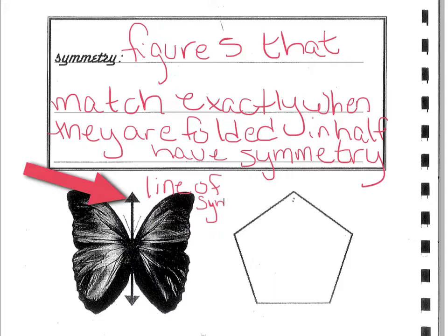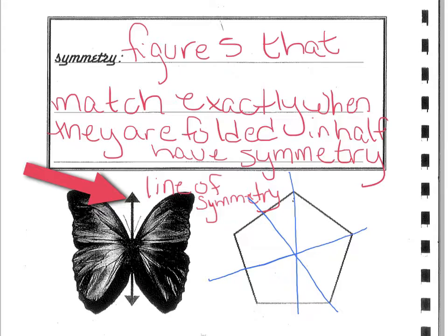If we fold this butterfly over the line of symmetry, it will match exactly. Now if we have a regular pentagon like we have here, do you think it would have a line of symmetry? It's hard to tell without looking at it, but we can tell that it has a line of symmetry because we can fold it. We could fold this many different ways. In this case, this one has many lines of symmetry. Here's a line right here straight through the middle, and then we could go from our vertices. If we line up and go from our vertices of the pentagon, we have lines of symmetry going that way as well.